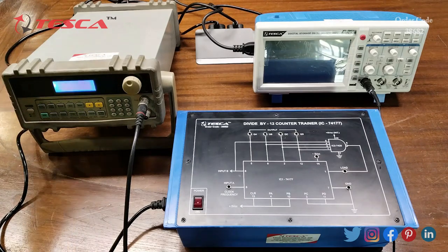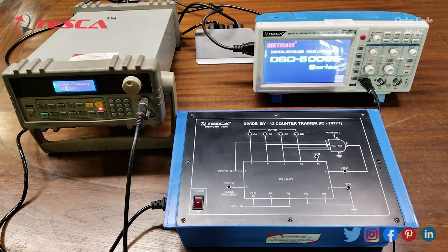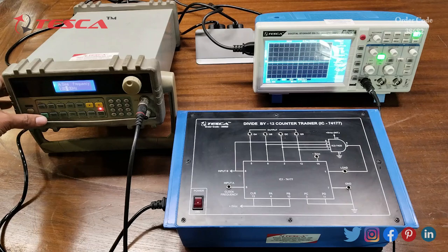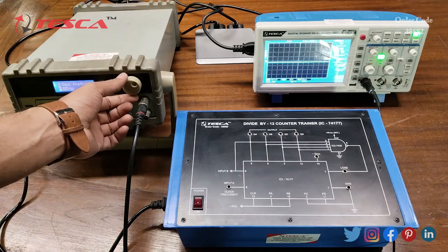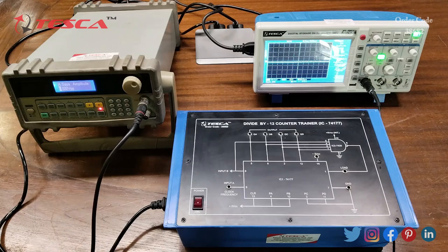First we will switch on the function generator and the DSO. Now we have to give square wave, so we will change the settings to square wave.